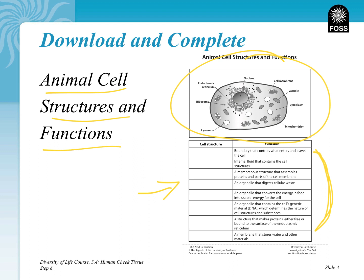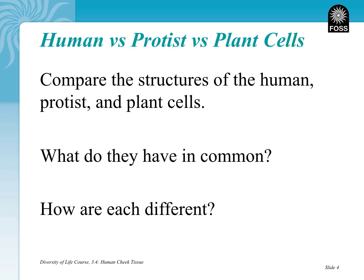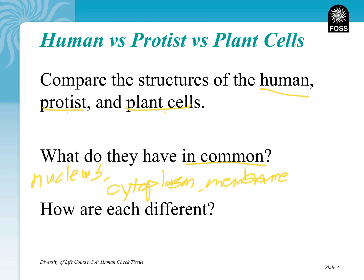So far we have looked at human cells — your cheek cells — the protease and paramecium, and plant cells, the elodea cells. The real common question is what do they have in common? What do we, as humans, share with plant cells and with the paramecium? By looking at those, you see things like a nucleus, cytoplasm, and a membrane, as well as several other structures that we all share in common.